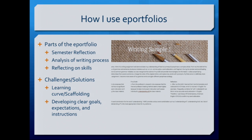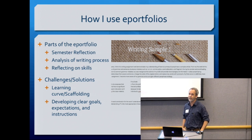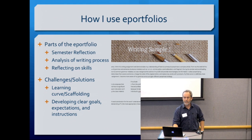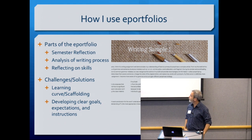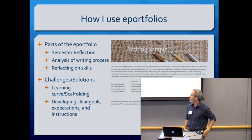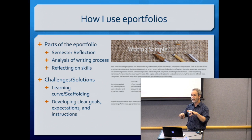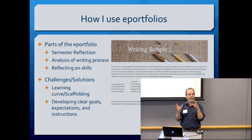Here's how I use them. There are three parts: there's a semester reflection where they talk about the writing process and then reflect on the skills we've covered in class. The semester reflection is basically a short essay where they talk about their progress, their challenges, etc. Then they have their analysis of their writing process, where they actually take us through some of their drafts and say, here's how I started, here's my rough drafts, here's some feedback I got, here's what I changed.